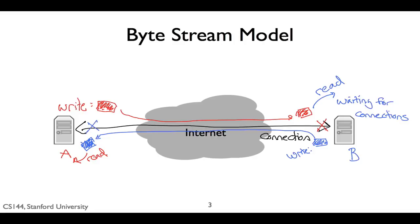If you've ever seen an error message in a web browser saying "connection reset by peer," that's what this means — the web server closed the connection when the web browser wasn't expecting it. Of course, the server can refuse the connection as well. You've probably seen "connection refused" messages, or had a browser wait for a long time because the server isn't even responding with the refusal.